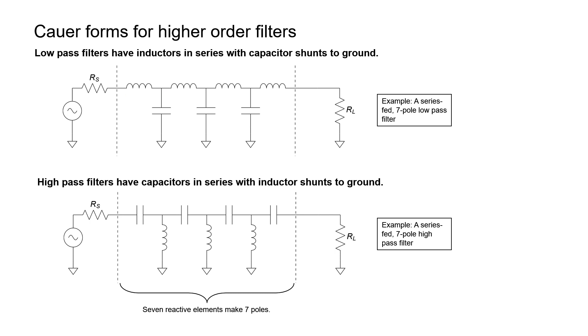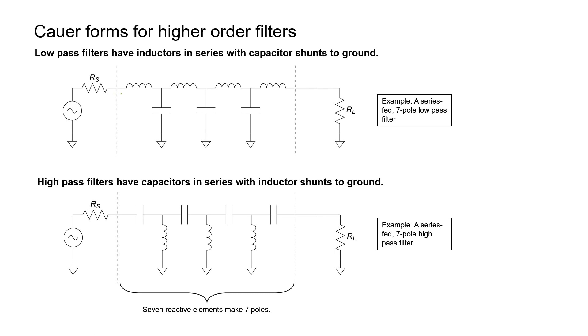This filter blocks the high frequencies, but what about the low frequencies? Low frequencies have no trouble getting through the inductors, they're not affected by the capacitors, and they're not shunted to ground. The low frequencies zoom right through the filter, but the high frequencies get impeded at every step. Because the first element is in series, this is called a series-fed filter. If a capacitor comes first, it's a shunt-fed filter. Because we have seven reactive elements here, this is a seven-pole low-pass filter.